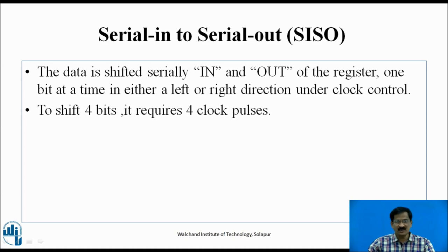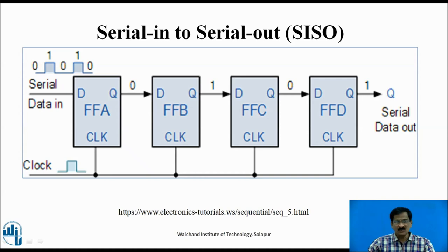The first type is Serial-In to Serial-Out. The data is shifted serial-in and out of the register one bit at a time, in either left or right direction under clock control. To shift 4 bits, it requires 4 clock pulses. This is the circuit diagram for a 4-bit Serial-In Serial-Out shift register.